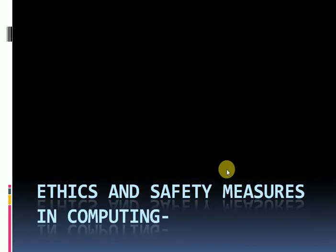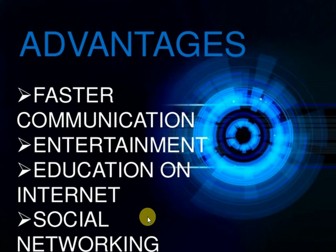Hello students, today we will start our next chapter: ethics and safety measures in computing. Nowadays each and every person is directly or indirectly affected by the internet, as it is an ocean of information. Using the internet, one can access millions of articles easily. As you all know, the internet offers innumerable advantages — faster communication, entertainment, education, and social networking.